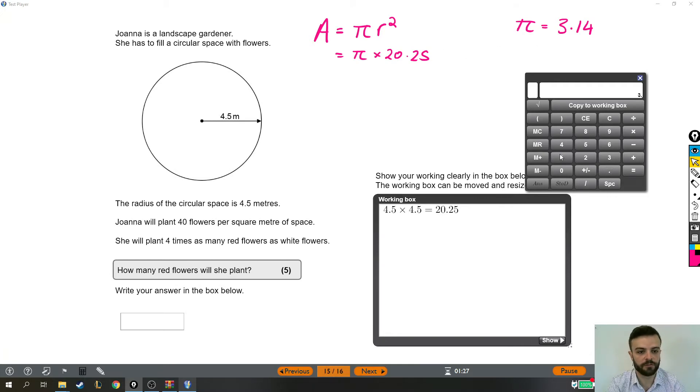So then we do that. Pi is 3.14, so next we have to do 3.14 times 20.25. And 20.25 times pi gives us this number. That is the area of the circular space that Joanna is going to fill with flowers. So I'm going to put area of space, area of the circle, area of the thing that she's going to fill with flowers.